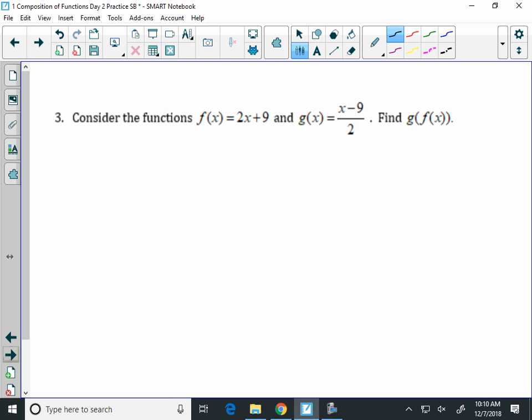Number 3 here. We're going to do the same thing. We have two functions, and we're finding this time g of f of x. So in this one, we're taking the letter on the right f and putting it into the function of g. So let's write what we have for g first. We put our parentheses for x, minus 9, over 2. Now in place of x, you're going to put that function of f, 2x plus 9.